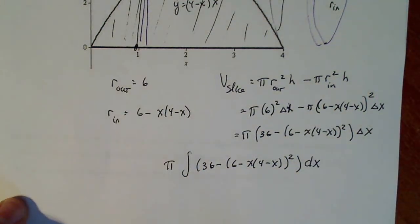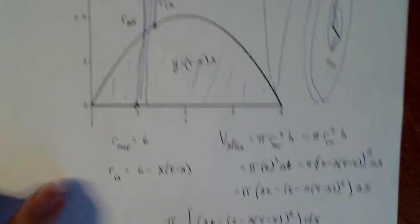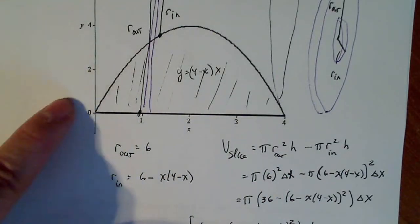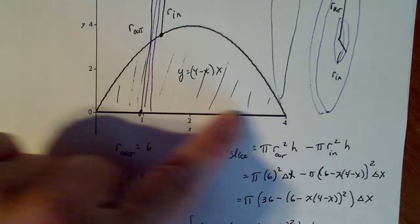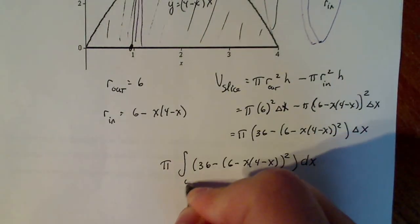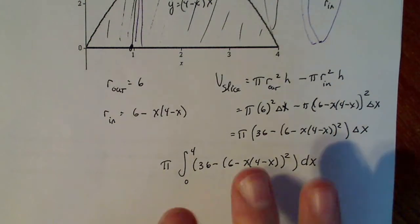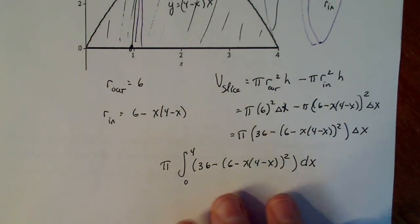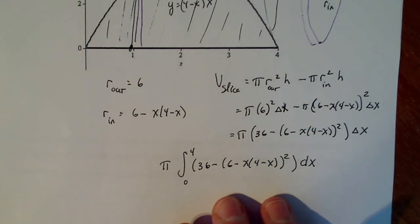And we have to think about our bounds. If I move my slices back and forth, the one extreme is x = 0 and the other extreme is x = 4. So my bounds go from 0 to 4. And then there's my definite integral whose value equals the volume of the solid produced when the region R revolves around the horizontal line y = 6.